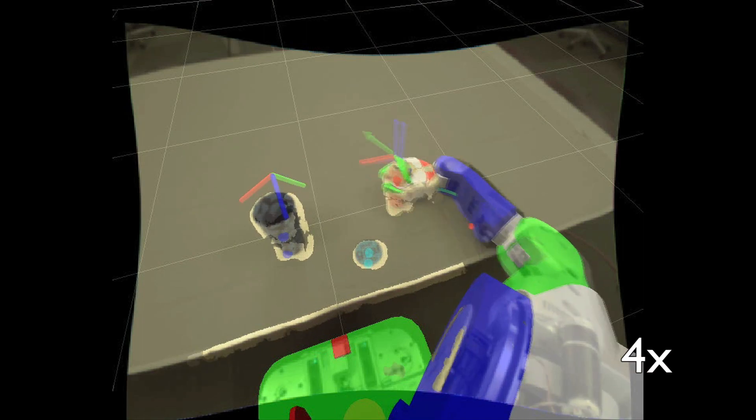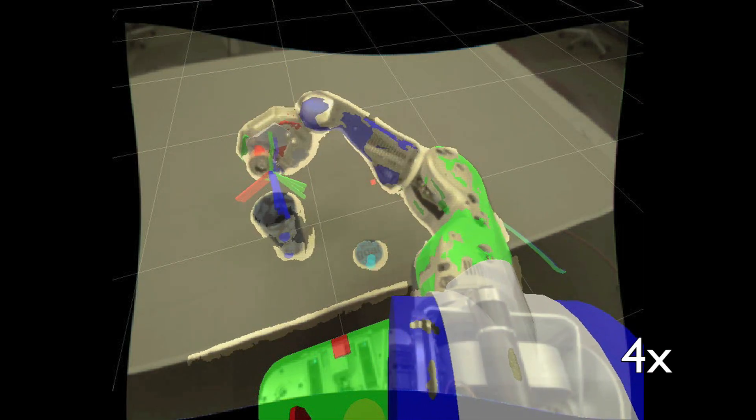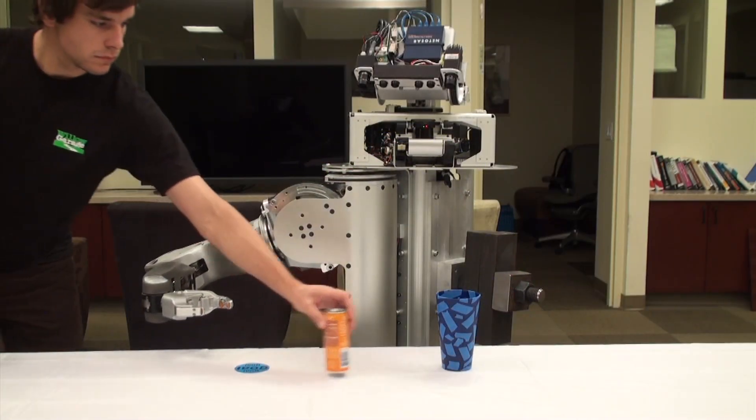One of the tasks was grasping a can and pouring it into a cup. Once the robot learned these movements it could generalize them to new situations.